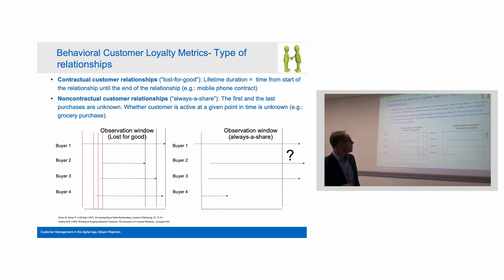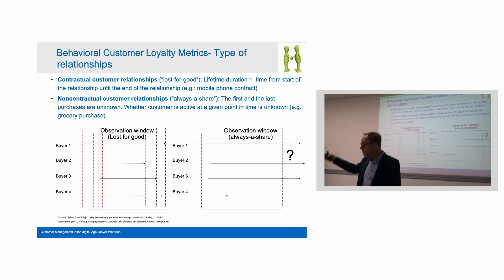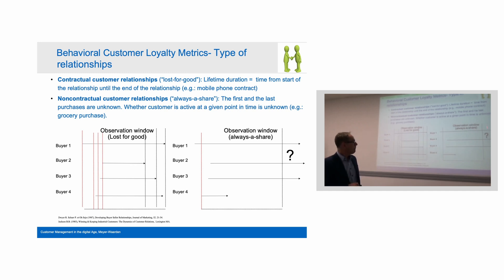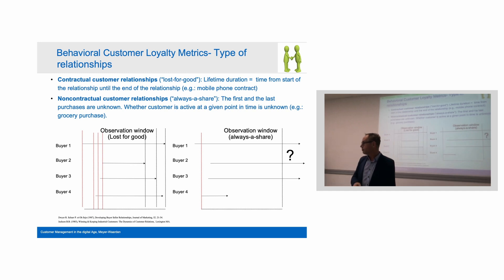After the first purchase, you look at different timeframes and can measure whenever the customer rebuys — you know the customer is still active. But you have some customers, like this one, who bought regularly, and today you don't know if they will continue to buy tomorrow.